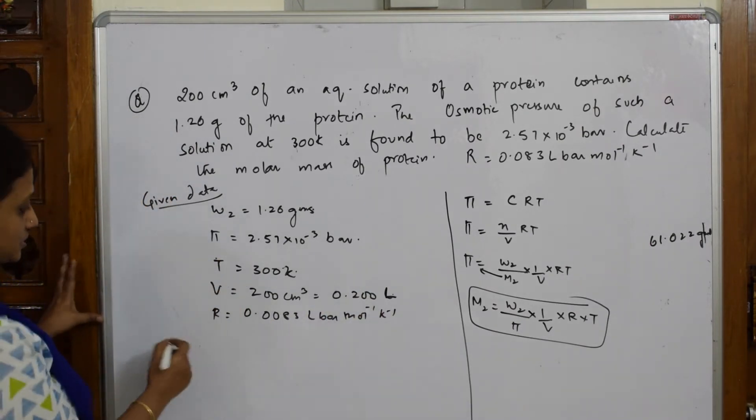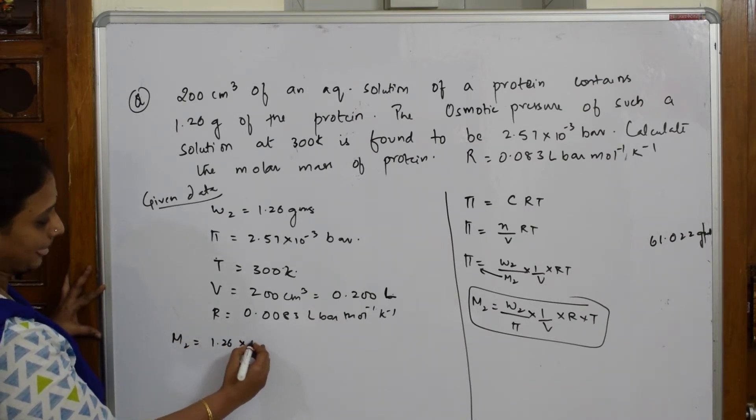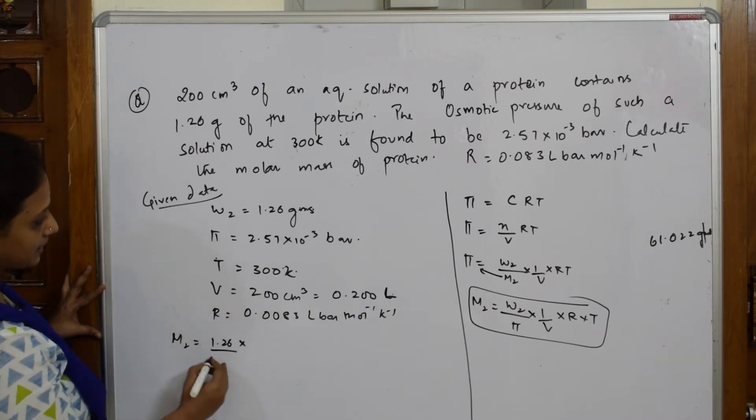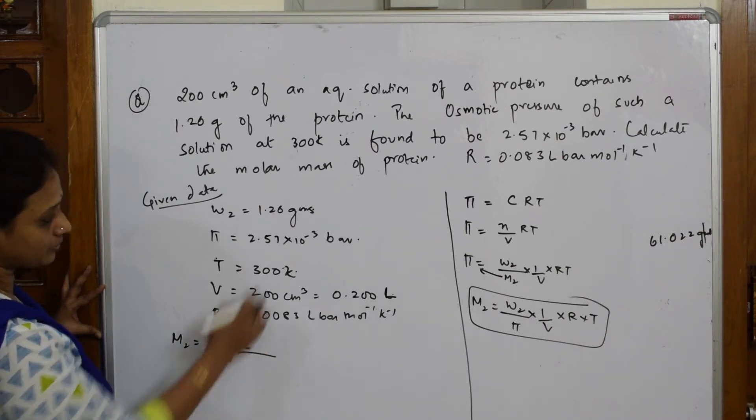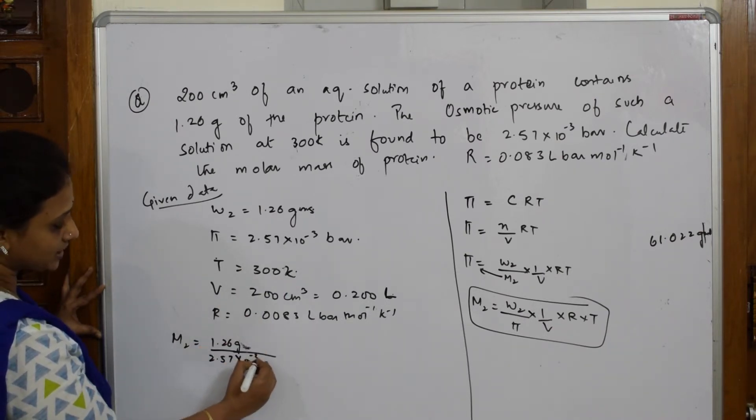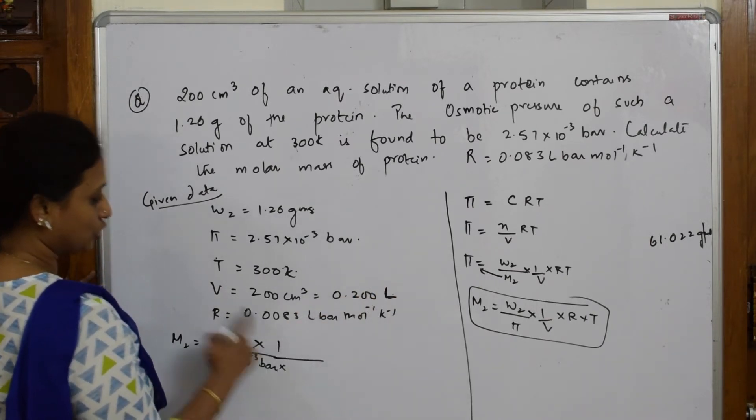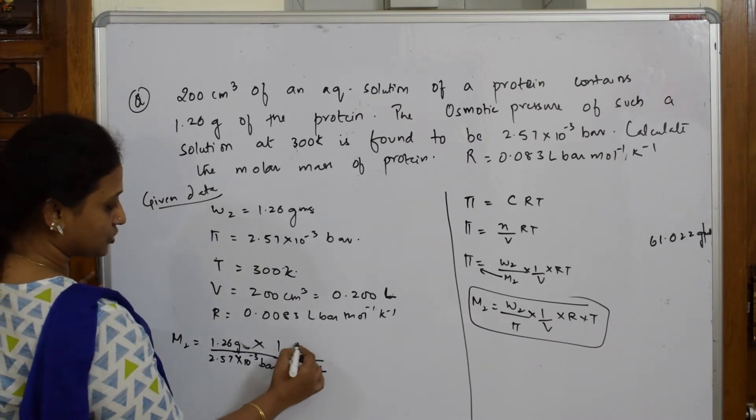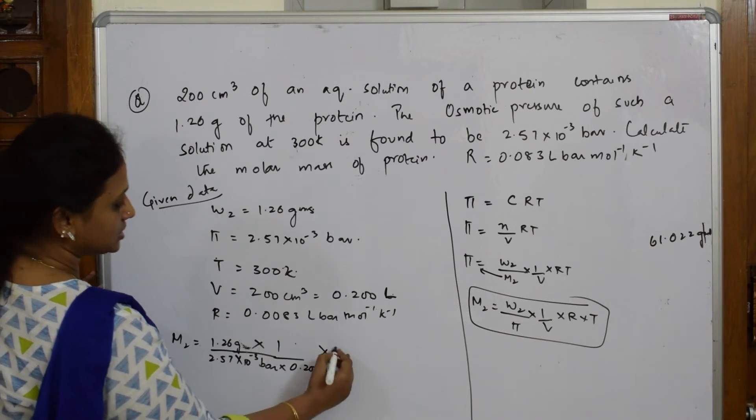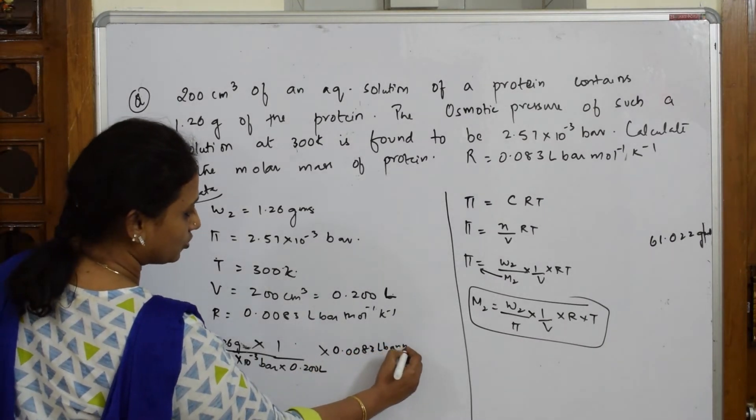So you can directly substitute in the formula. M2 is equal to 1.26 divided by pi is 2.57. Let us write the units also. 1.26 grams divided by 2.57 into 10 to the power of minus 3 bar into 1 by volume is 0.2 L into R, that is your 0.083 L bar mole inverse kelvin inverse into temperature 300 kelvin.